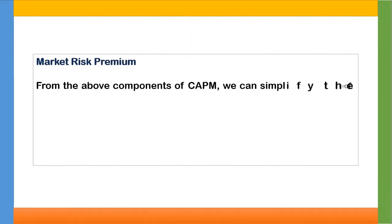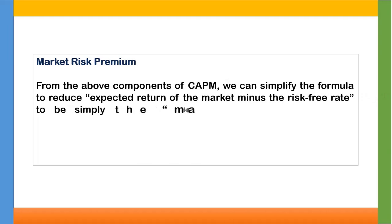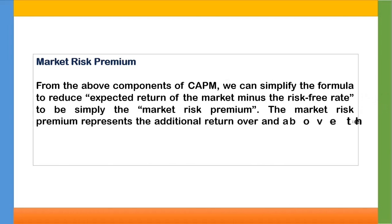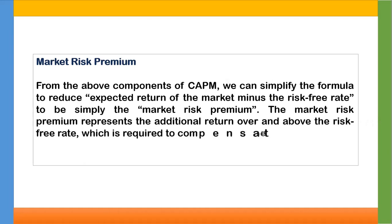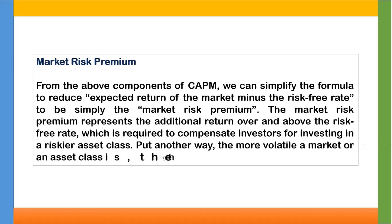Market risk premium. From the components of CAPM, we can simplify the formula — the expected return of the market minus the risk-free rate is simply the market risk premium. The market risk premium represents the additional return over and above the risk-free rate, which is required to compensate investors for investing in a riskier asset class. Put another way, the more volatile a market or asset class is, the higher the market risk premium will be.